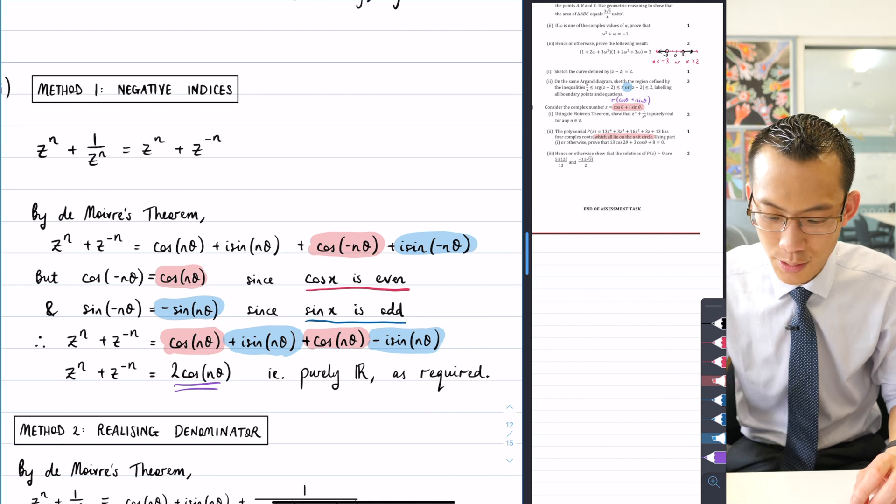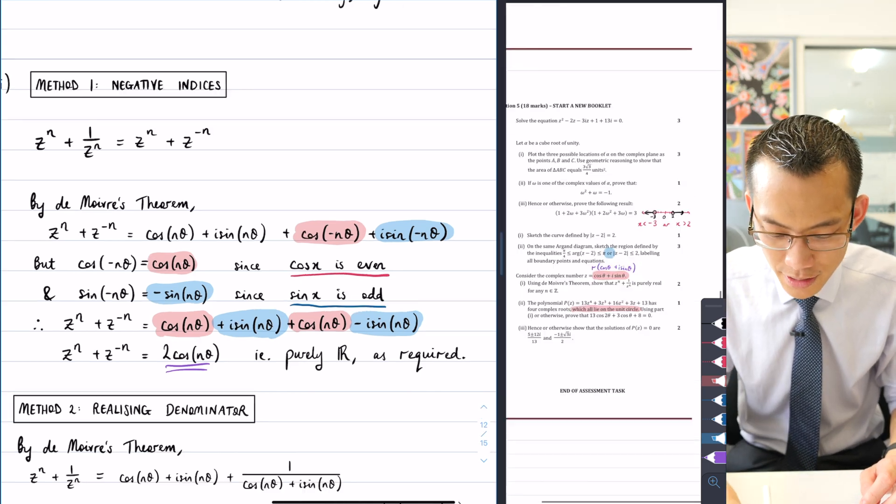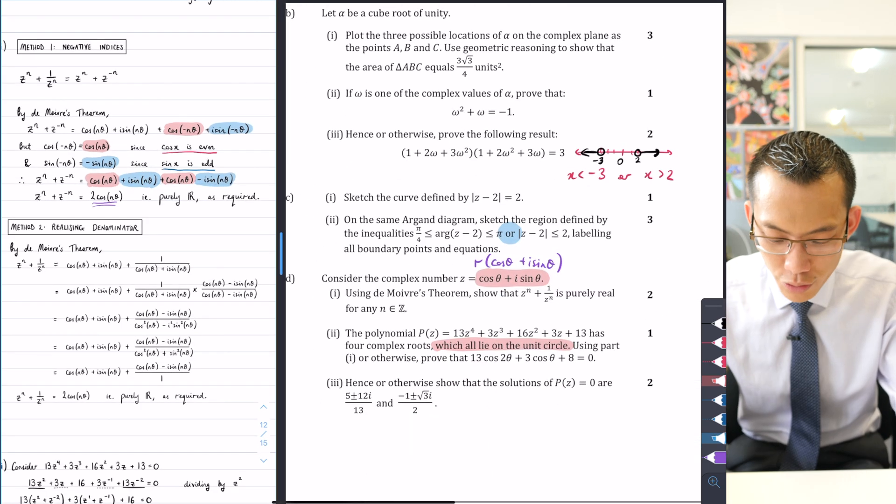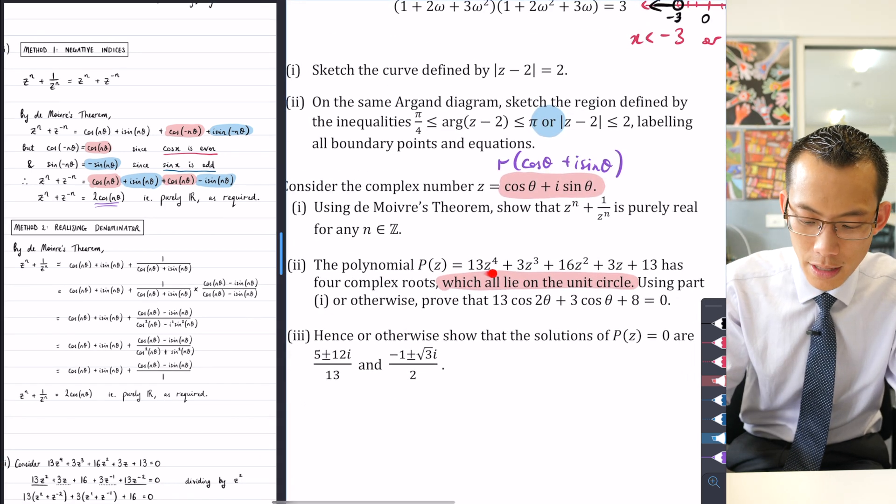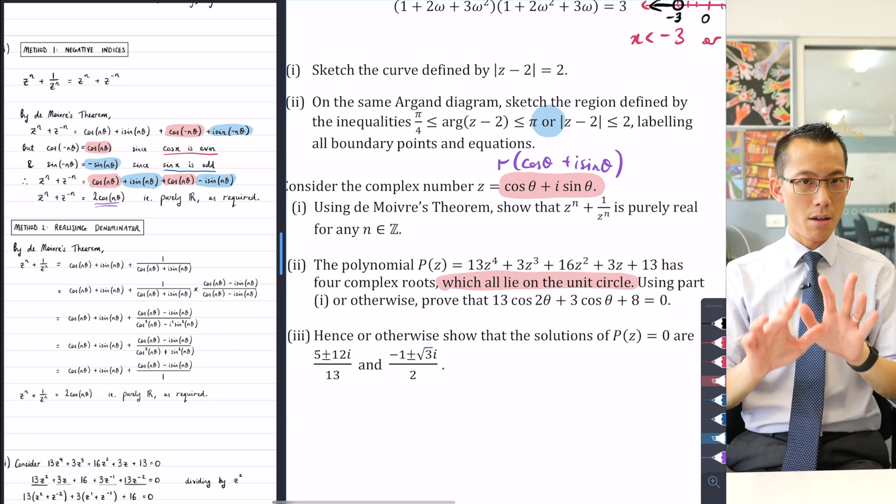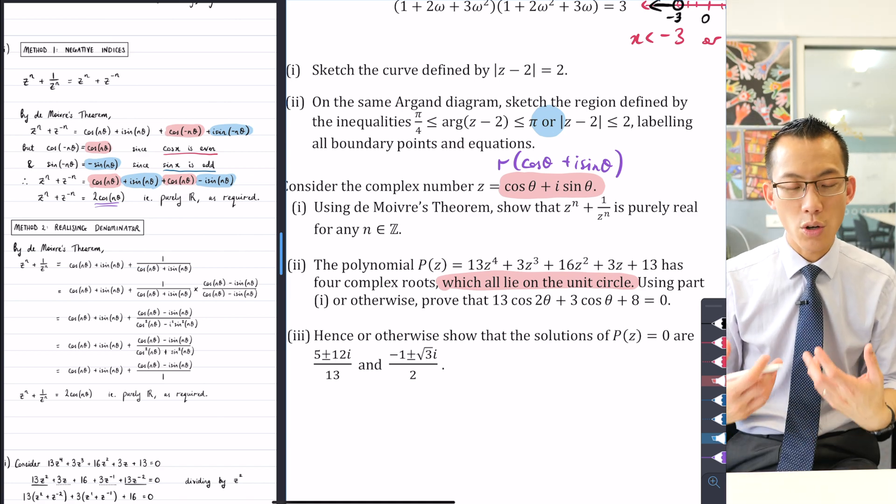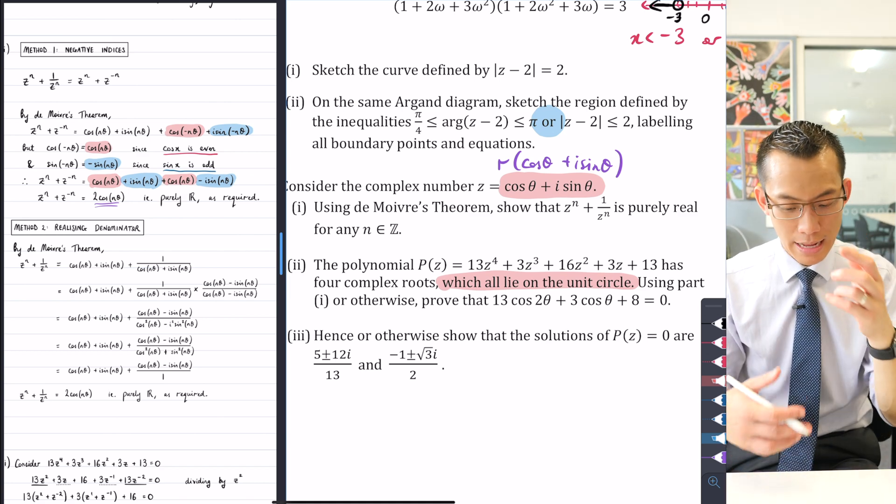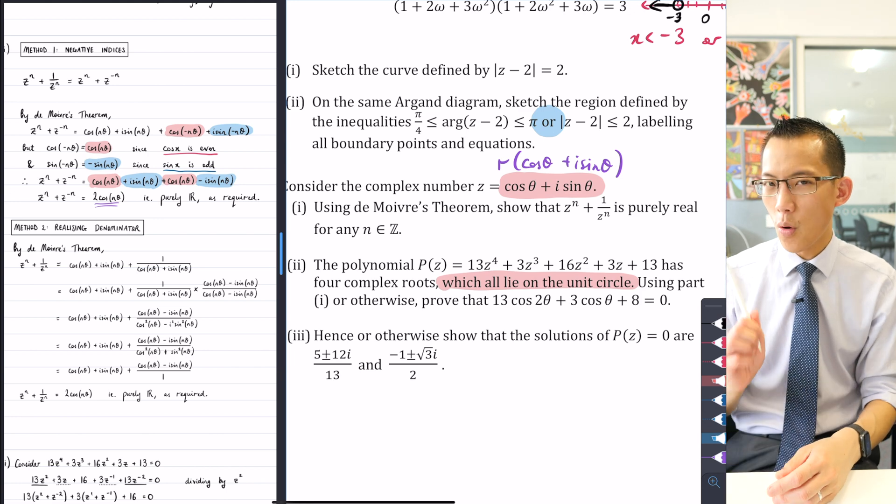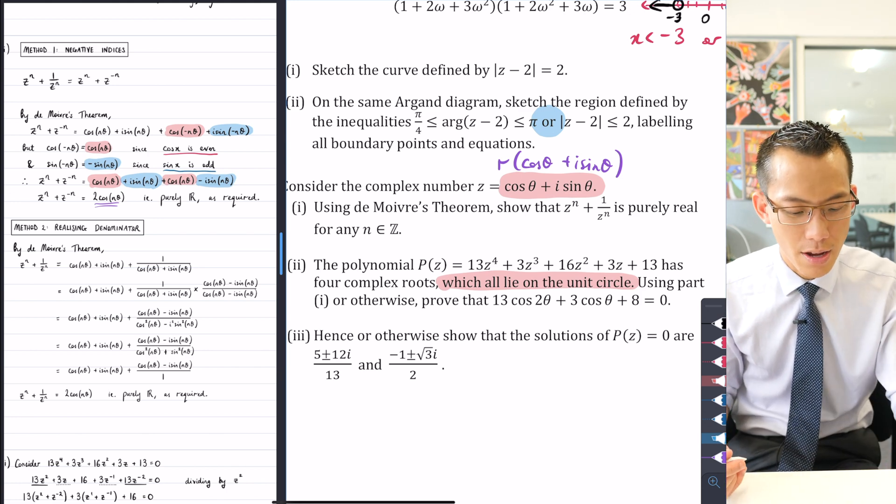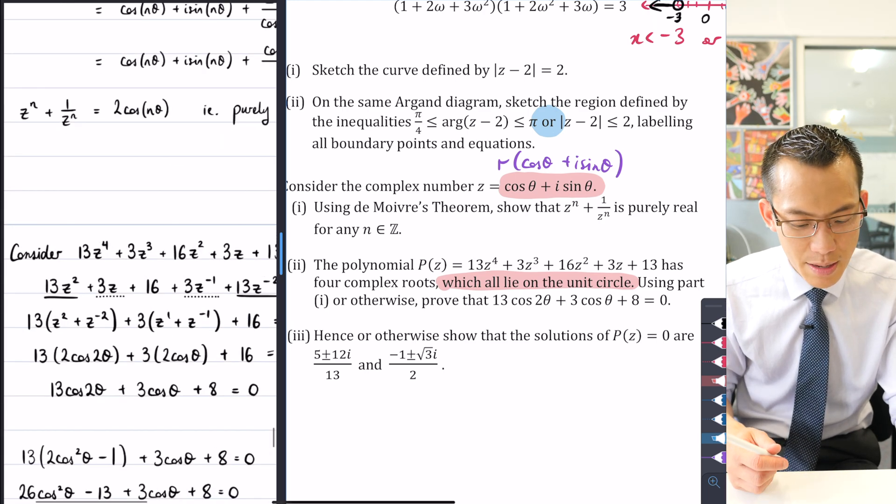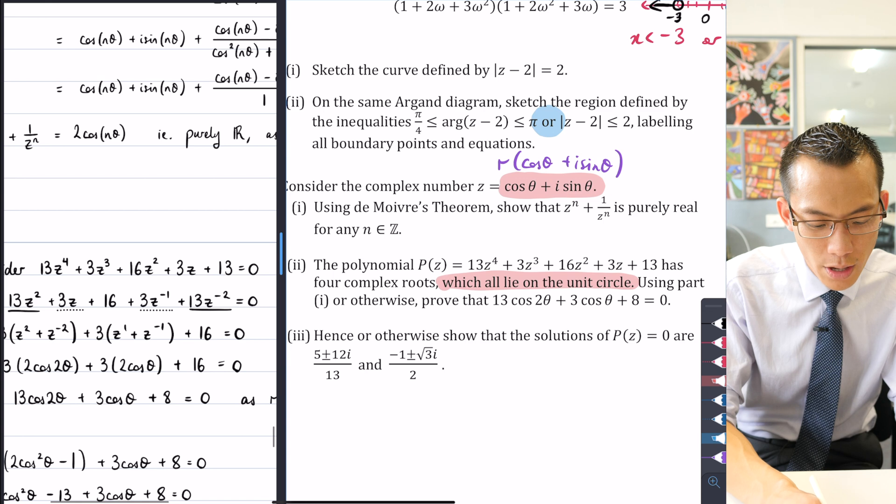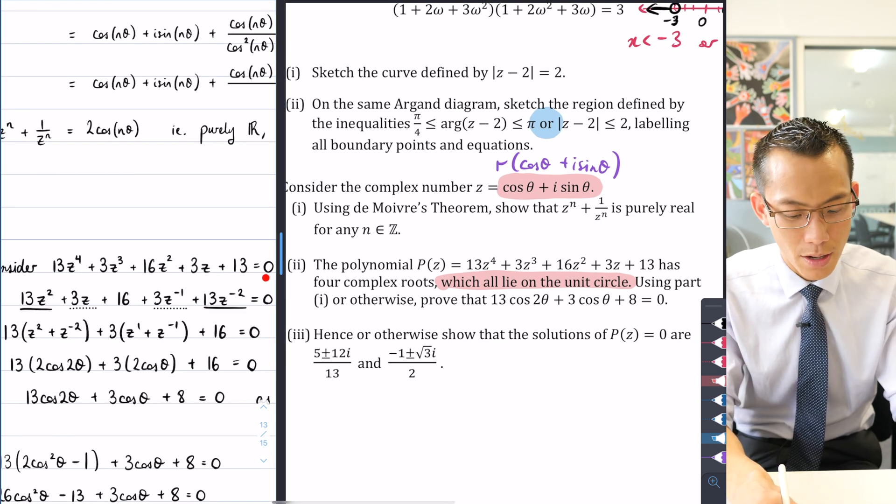So you ended up at this result down here which you definitely needed for part two. Speaking of part two, it says the polynomial p of z rather equals, and then they give you this long awkward thing in here. It has four complex roots which all lie on the unit circle. Pause. When you've got a polynomial and it has complex roots, that it has four complex roots, that means we're saying when is this equation equal to zero. That's how you find roots, right? So that's why, oh I've skipped over something I'll come back to this in a second, that's why you can see my first line here is equal to this whole polynomial and I've let it equal to zero.